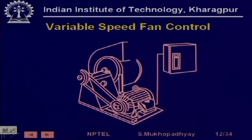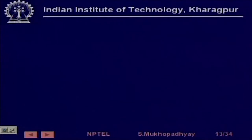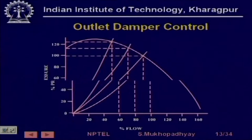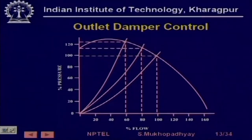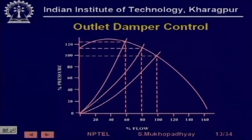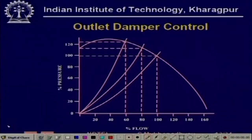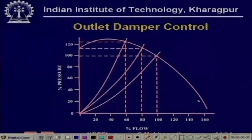As we shall see, they can save a considerable amount of energy. Let us look at what happens to the operating characteristics when you have damper control. Here is the fan curve. A damper essentially puts a resistance.